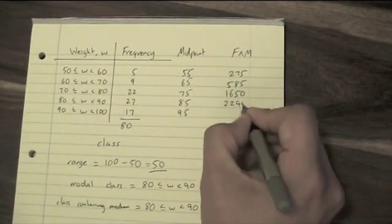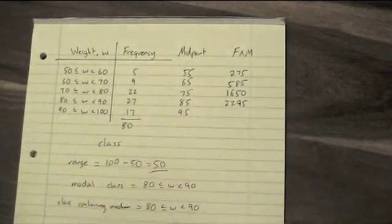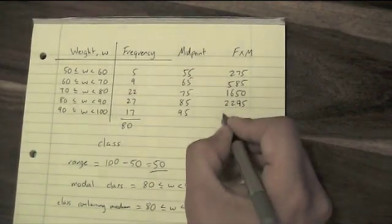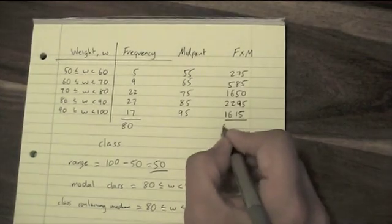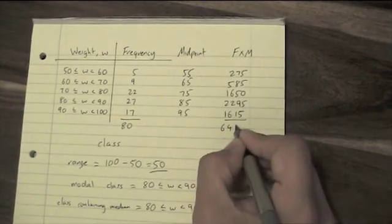27 times 85 is 2295. 17 times 95 is 1615. I add them all up, and when I add them all up, I get 6420.